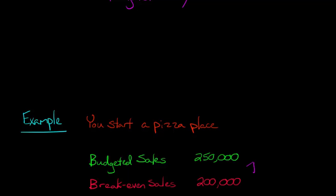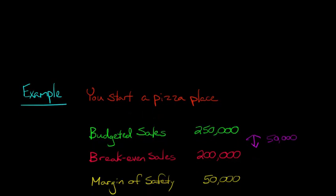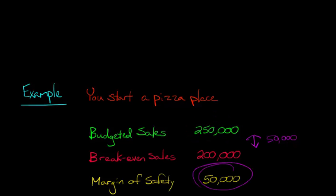Basically, if you look here, we've got a difference between what we're expecting in sales and what we would actually need to break even. So we've got this spread of $50,000, and that's what our margin of safety is — it's really that simple. If we go below $200,000 we're losing money, because we need at least $200,000 to break even. But we're actually expecting $250,000, so we've got this $50,000 buffer. Sales could drop by $50,000 before we'd really start having any serious problems.